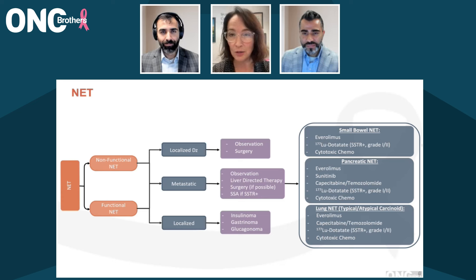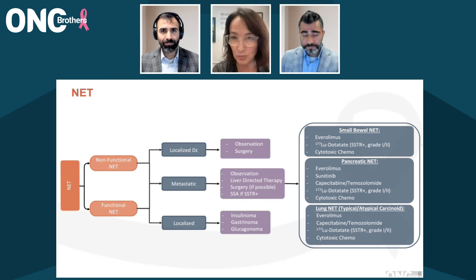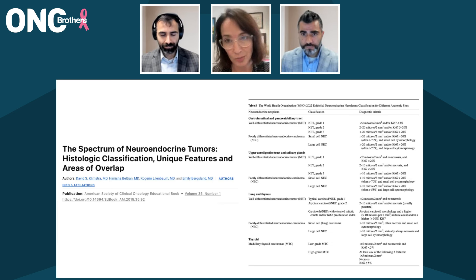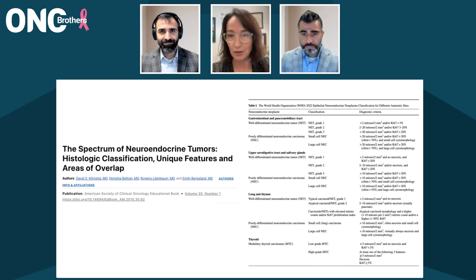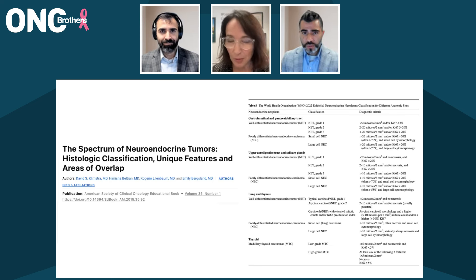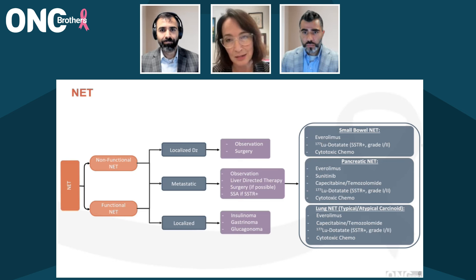The WHO classification criteria have really changed considerably over the last 10 to 15 years, which is why we're all confused because the terminology keeps shifting. At present, we're using well-differentiated grade 1, 2, and 3 neuroendocrine tumor. If it says tumor on a pathology report, it generally implies it's going to be well differentiated. And then we're calling it poorly differentiated neuroendocrine carcinoma. KI-67 determines the grade: grade 1 is KI-67 1 to 2, grade 2 is 3 to 20, and grade 3 is greater than 20. Poorly differentiated neuroendocrine carcinomas are generally greater than KI-67 of about 55%.